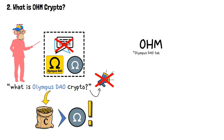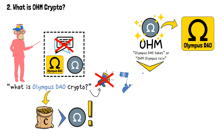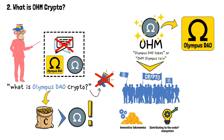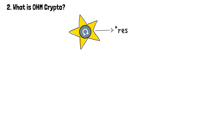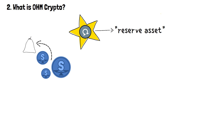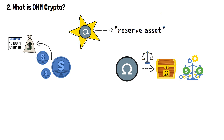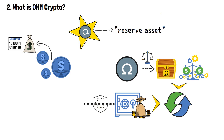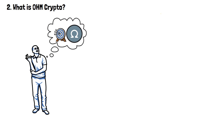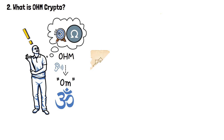OM, also referred to as the Olympus DAO token or OM Olympus coin, is the native token of Olympus DAO. It holds a rather unique position within the crypto industry, bringing forth innovative tokenomics and contributing to the evolution of the overall ecosystem. The uniqueness of OM lies in its role as a reserve asset. Unlike traditional stablecoins backed by fiat or algorithmic mechanisms, OM derives its stability from the Olympus DAO treasury's reserves and a robust stability mechanism.